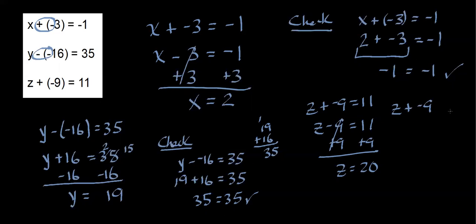I'm going to rewrite the original. z plus negative 9 equals 11. I'm going to plug in 20 in place of z because that's what I got right here. 20 plus negative 9 is positive 11. And everything checks out.